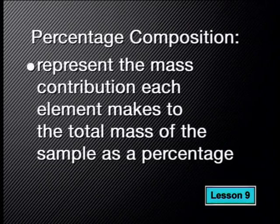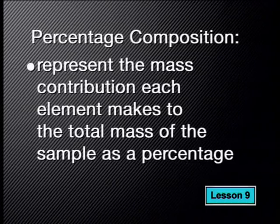Have you ever wondered whether we can confirm that a chemical formula of a substance is really correct and not just based on one of those bonding theories you learnt about in previous grades? Well, in this lesson, we will see how the relationships and equations that we've learnt about so far help us do exactly that. The first way is to represent the mass contribution each element makes to the total mass of the sample as a percentage. This is called the percentage composition.